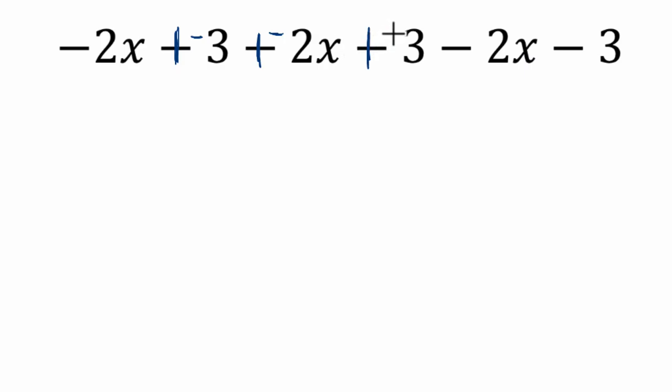So for example, subtracting 3 is the same as adding a negative 3. Subtracting 2x is the same thing as adding negative 2x. And then subtracting 3 is the same as adding a negative 3. Why did I do that?